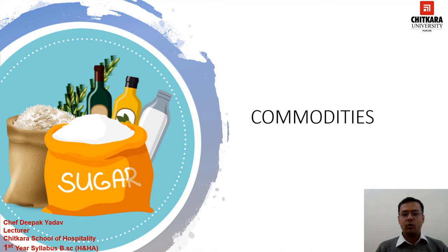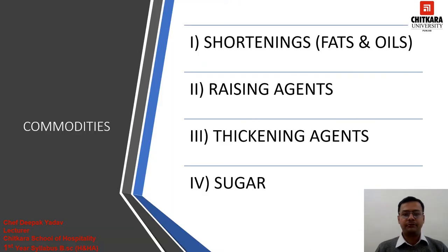Hello everyone, welcome to Chitkara University. My name is Chef Deepak. Today we are going to discuss about commodities which we use in our hot kitchen as well as in bakery. In this chapter we are going to cover fats and oil, rising agent, thickening agent and sugar.